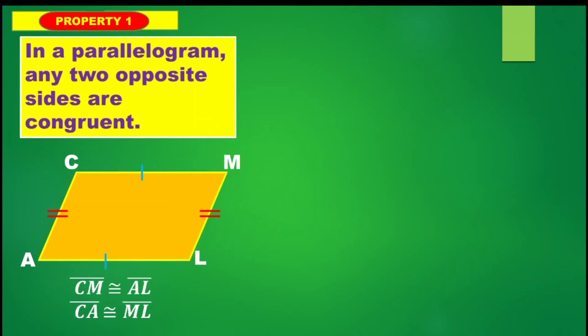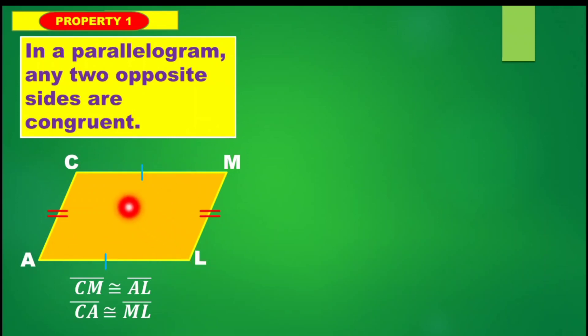Thus, segment CM is congruent to segment AL, while segment CA is congruent to segment ML.